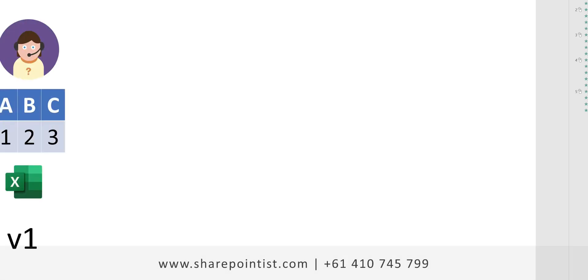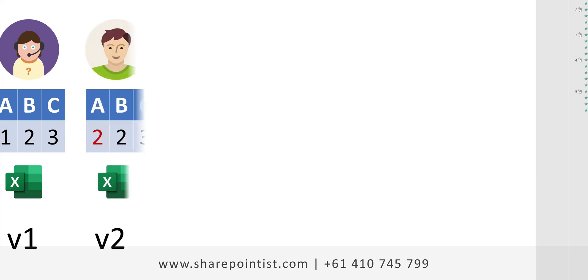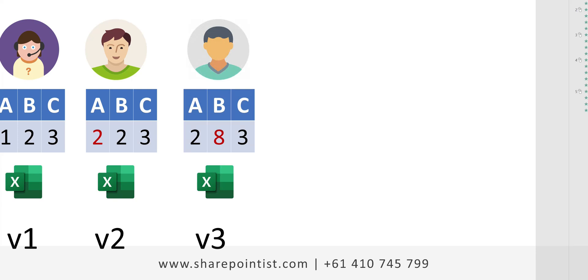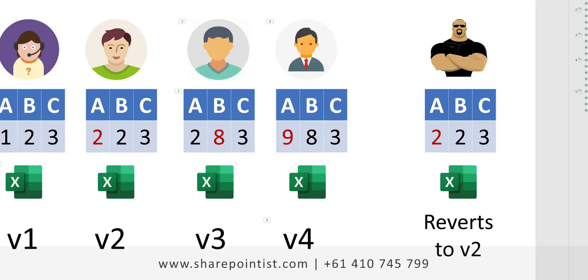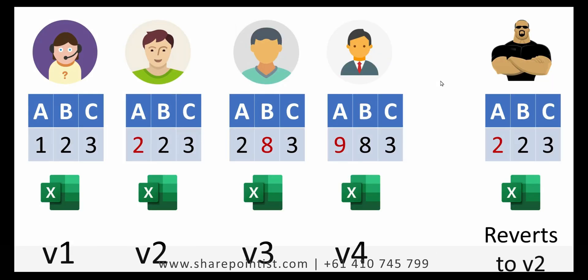Now let's have a look at this scenario. User A updates some data in an Excel — or rather creates it — making version 1. User 2 opens up the file and updates it, making version 2. User 3 again opens up the same Excel file and updates it. Then user 4 does the same thing, making it version 4. The manager comes to have a look at the document and can see that all the versions are there — the document has been updated four times.